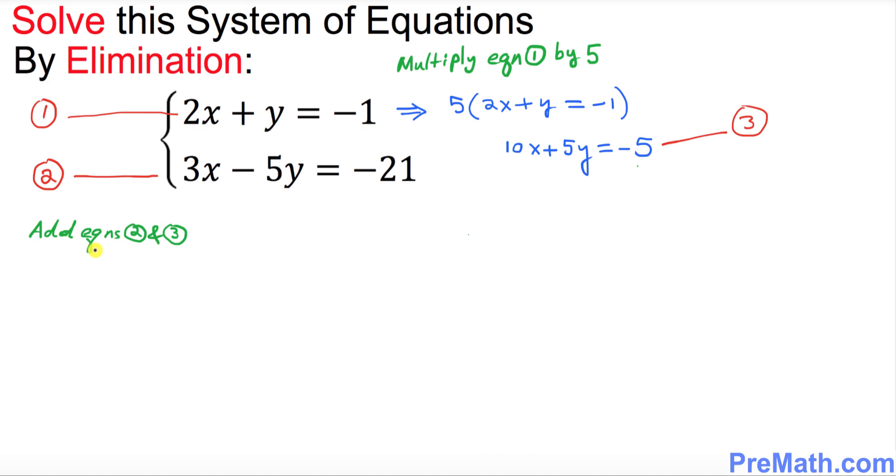So the next step what we're going to do is we're going to add equation two and three. Let's go ahead and put down equation number two is 3x minus 5y equals negative 21. And equation number three is 10x plus 5y equals negative five.